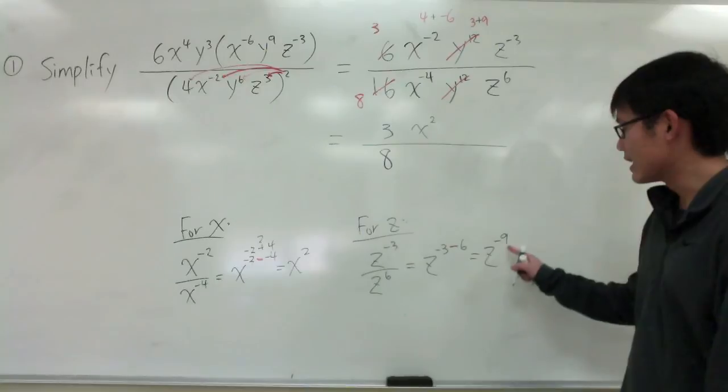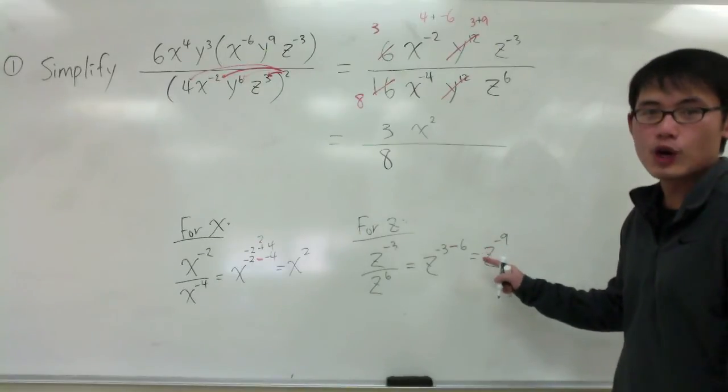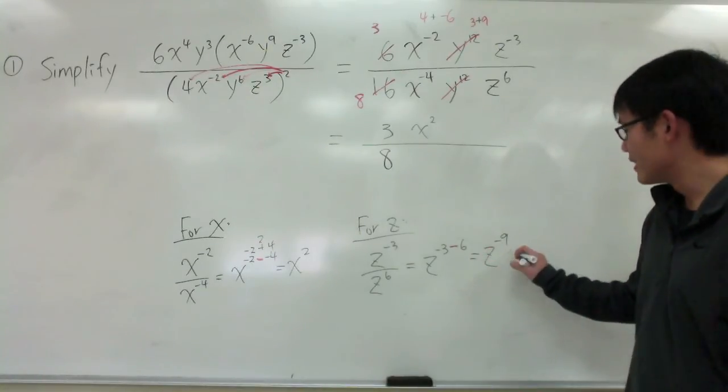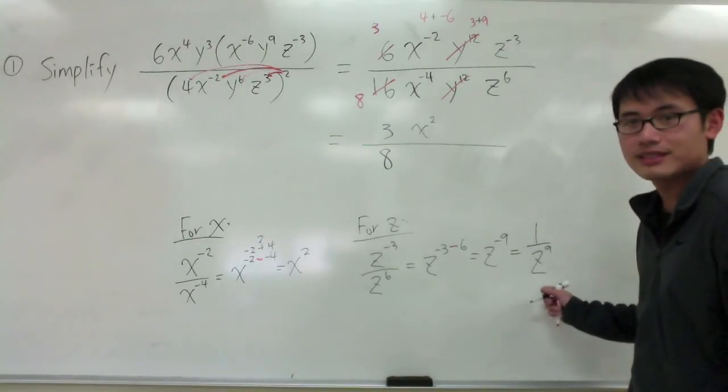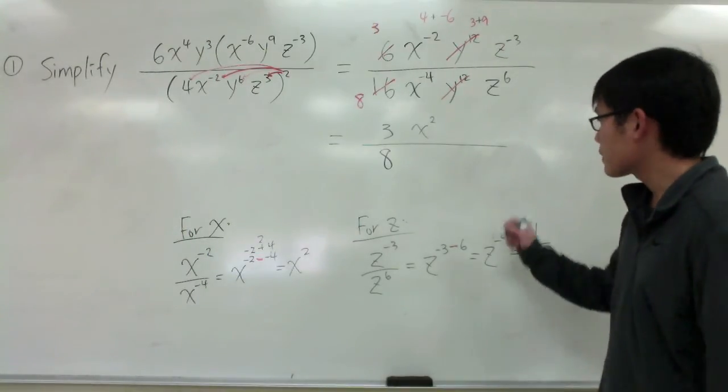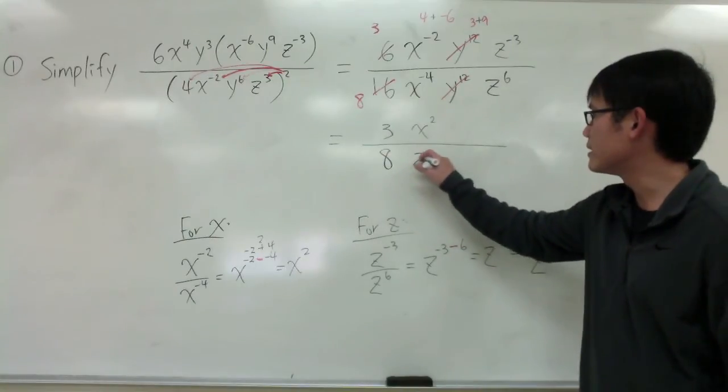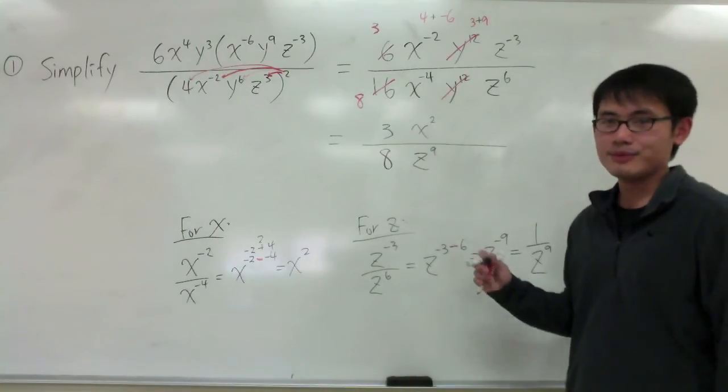And then, all we have is that, since we have a negative exponent, we will turn that into a fraction. This becomes 1 over z to the positive 9 exponent. And then, that will go to the denominator, z to the positive 9. Just like that.